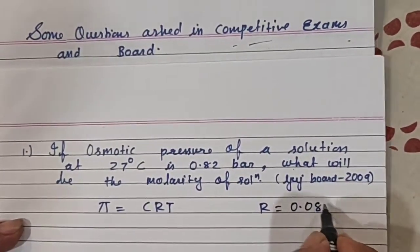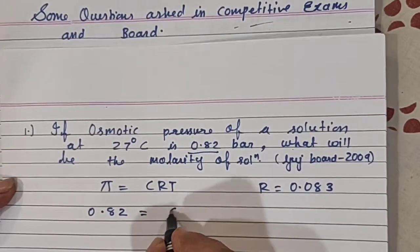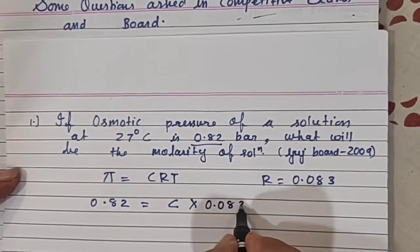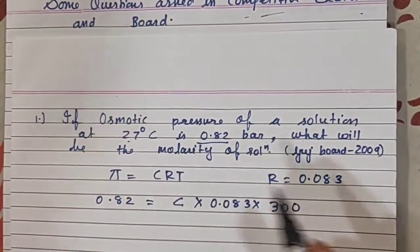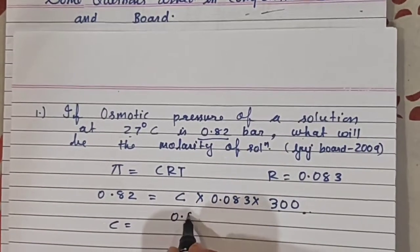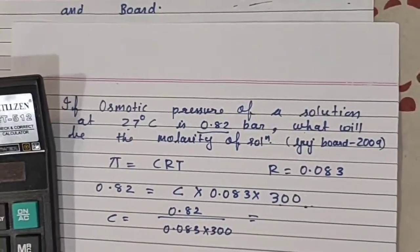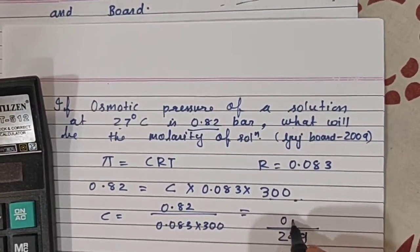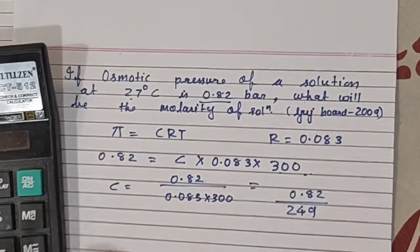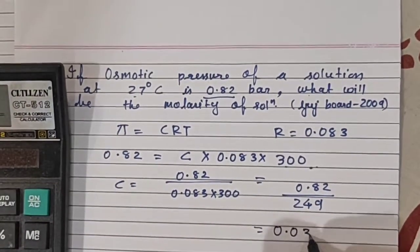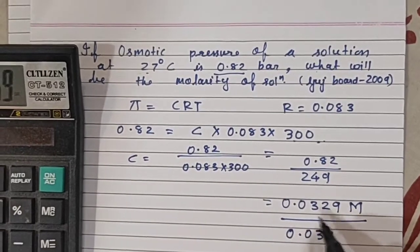R value is 0.083. What is our π? π is given 0.82 bar. So 0.82 bar equals C, we have to find out molarity means C, R value is 0.083 into temperature is 300. From where 300 came? 27°C plus 273 equals 300 Kelvin. We have changed to Kelvin.